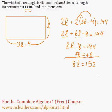So 8L is going to be equal to 152. And at this point we can divide both sides by 8. The length is 19 feet. That's the length.